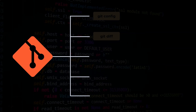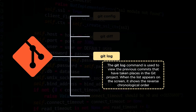Moving forth, the next command is the git log command. The git log command is used to view the previous commits that have taken place in a git project. It is a utility tool to have a look at the history of everything that happens to a repository. When the git log command is executed, the list that appears on the screen is in reverse chronological order, meaning it shows the most recent action on the top and the last action at the bottom.